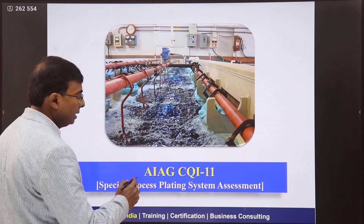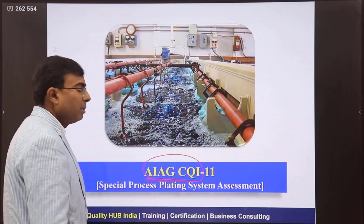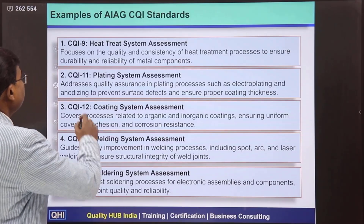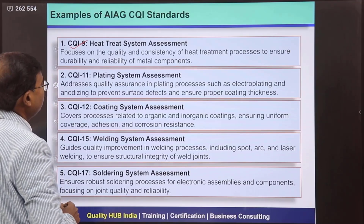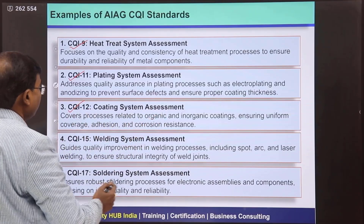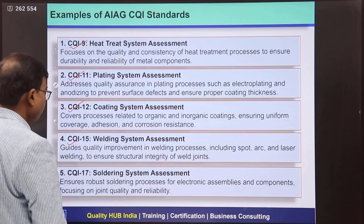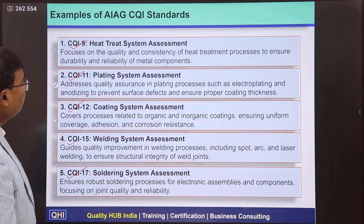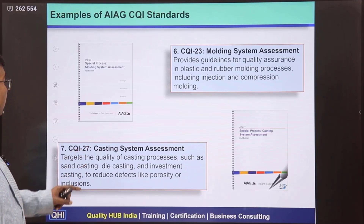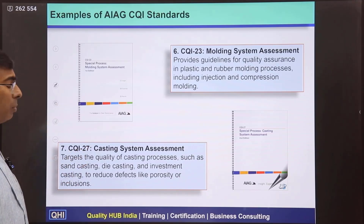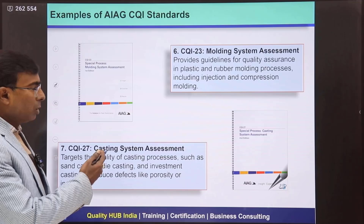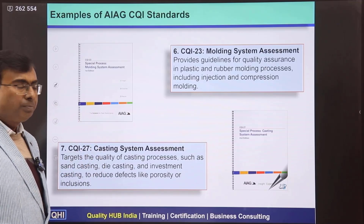When we talk about AIAG CQI series of standards, they have developed multiple standards. Some of the CQI standards developed by AIAG include: CQI 9 for heat treatment system assessment, CQI 11 which we are exploring right now for plating system assessment, CQI 12 for coating system assessment, CQI 15 for welding system assessment, CQI 17 for soldering system assessment, CQI 23 for molding and casting system assessment, and CQI 27 for casting system assessment. These are the most commonly practiced and used standards.